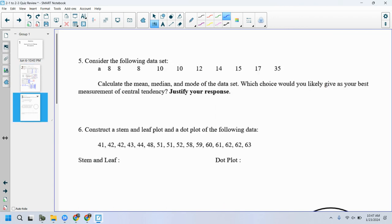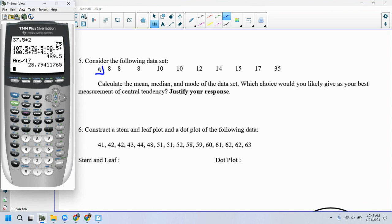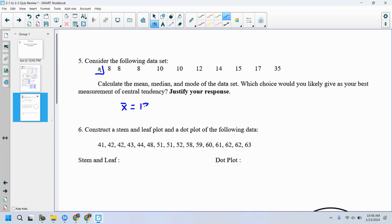Consider the following. There's an A in there. I think this was like I entered down while I was numbering and it made an A. So, sorry. There's an A in the data set. Calculate the mean, the amount of the data set, which choice would you likely give as your best measurement of central tendency? Well, let's first find that mean. 8, 8, 8, 10, 10, 12, excuse me. 14, 15, 17, 14, 15, 17, 14, 15, 17. And then a 35. How many entries do I have? I got one, two, three, four, five, six, seven, eight, nine, 10 entries. Okay. So 13.75 X bar is 13.75. Yeah. X bar. The mean is 13.7, right? Okay.